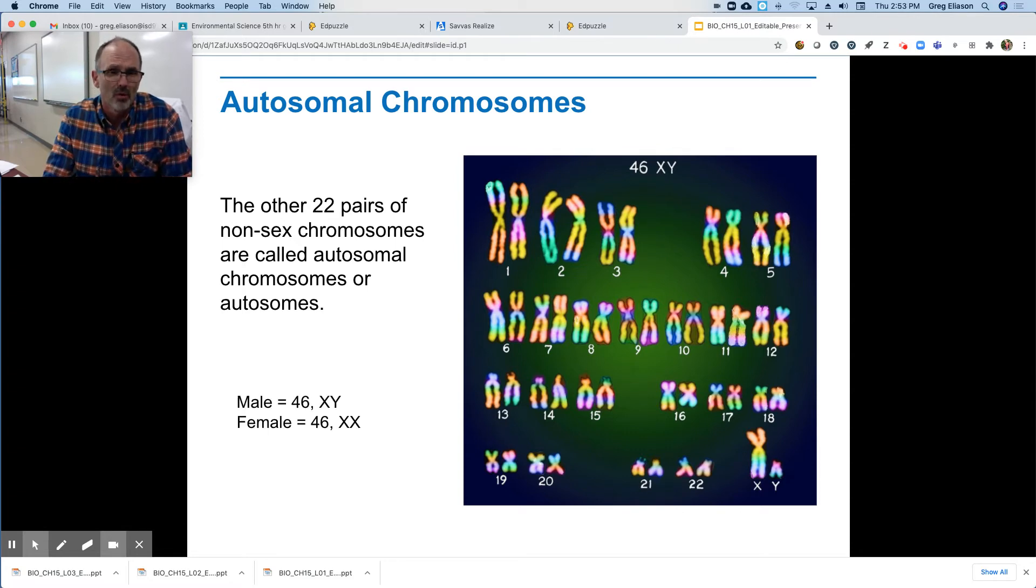Okay. And so overall males have 46 chromosomes with an X and a Y and females have 46 chromosomes with an X and an X. The diploid number is 46. The haploid number is 23. Remember that.